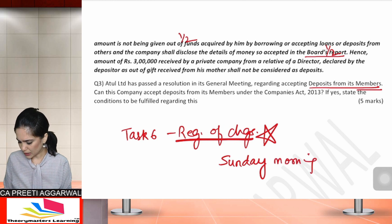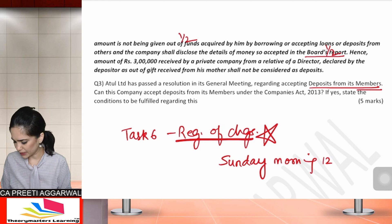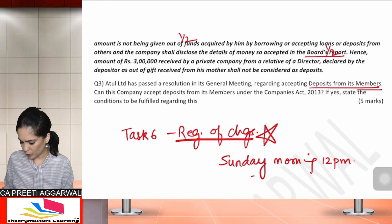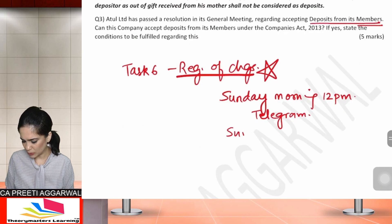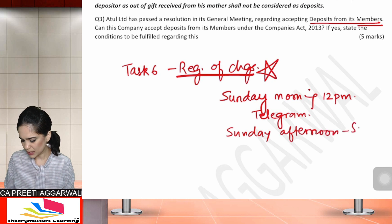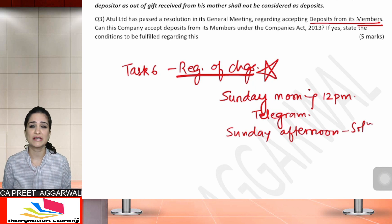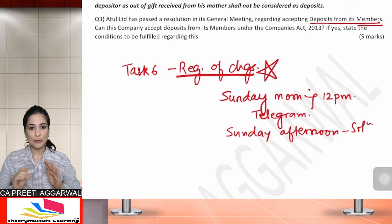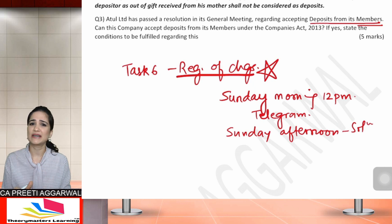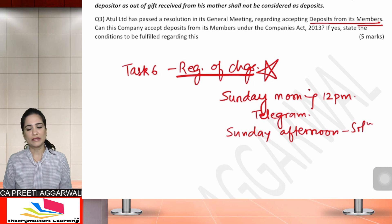On Sunday morning, around 12 pm — just before lunch — I will upload a paper on Telegram. Then on Sunday afternoon, we will discuss the solution. This is our plan for the next task. I want you to take time to study and be ready on Sunday morning with this unit. I will see you on Sunday.